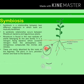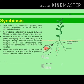Next is symbiosis. Symbiosis is a relationship between two different organisms in which both are mutually benefited. A symbiotic relationship occurs between Rhizobium bacteria and leguminous plants. These bacteria live in the root nodules of plants belonging to the pea family. Rhizobium is a nitrogen-fixing bacteria which converts nitrogen from the atmosphere into nitrogenous compounds like nitrites and nitrates, which are easily absorbed by the roots of legumes. The plant in turn provides shelter and food to the bacteria — in this way, both are benefited.